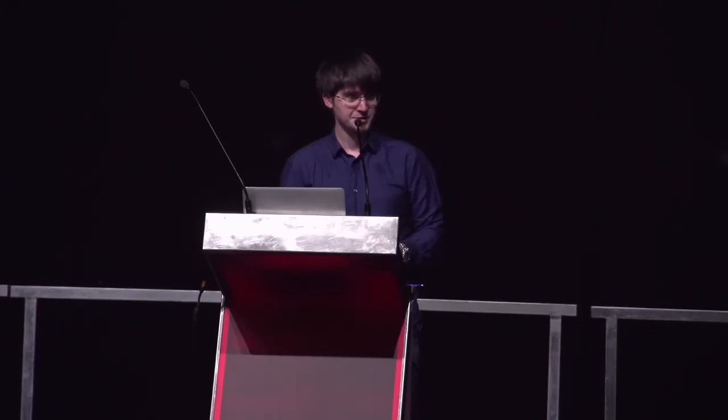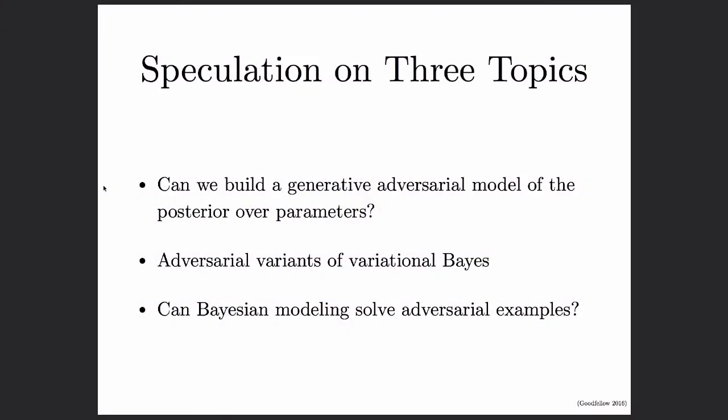There's a tradition at NIPS of having a single outsider come to each workshop. While the organizers didn't explicitly tell me that I am that outsider, I think my lack of Bayesian credentials makes that pretty clear. The role of the outsider is to sometimes challenge some of the views of the community or to bring in ideas from the outside. Since I essentially believe in all of the goals of Bayesian deep learning, I won't really be here to challenge the community, but maybe to offer a few ideas for research directions from my own perspective, looking at adversarial machine learning.